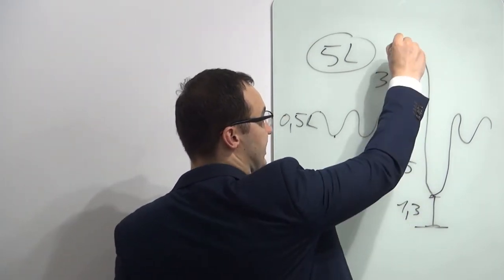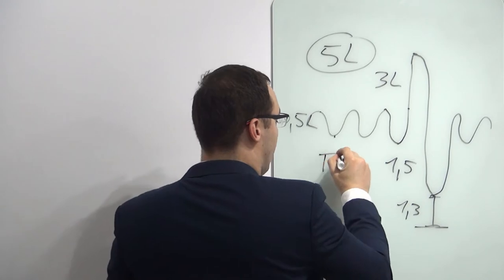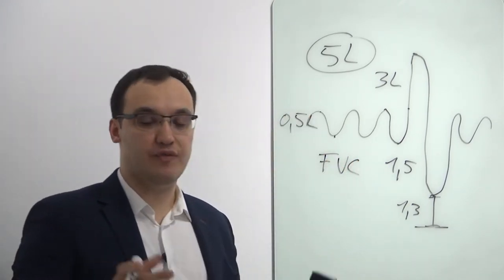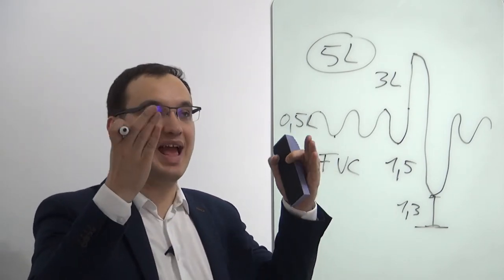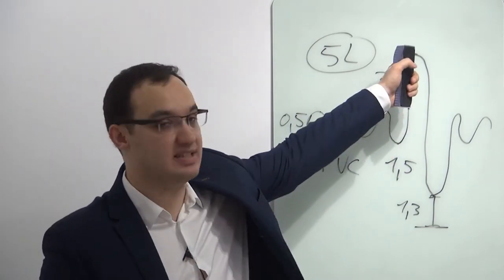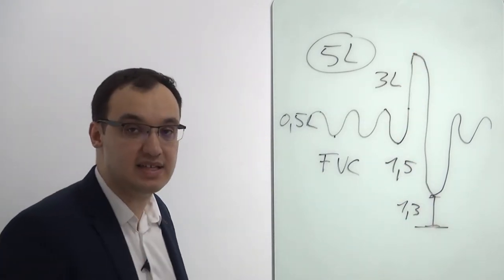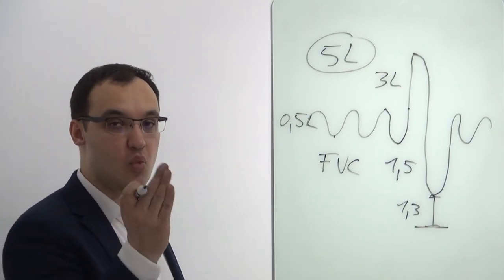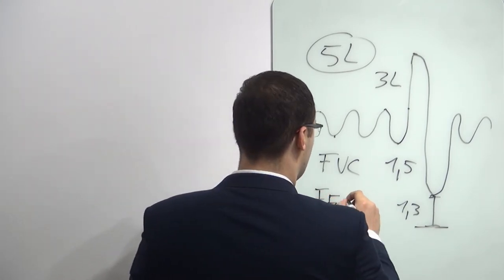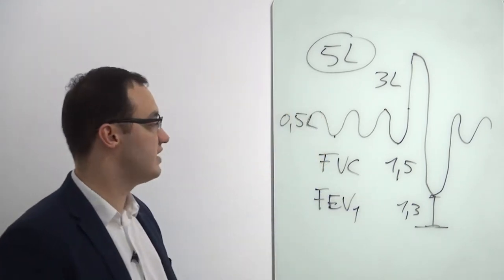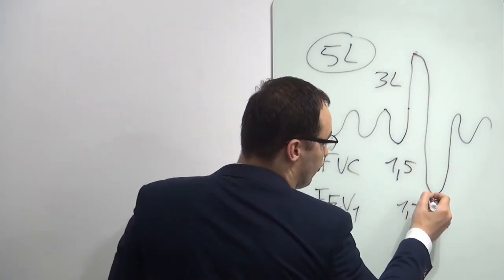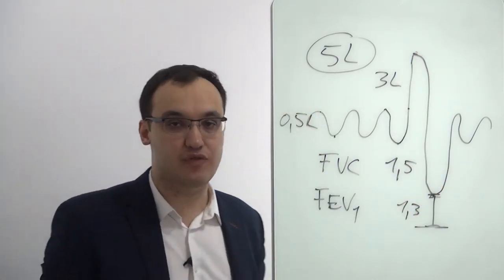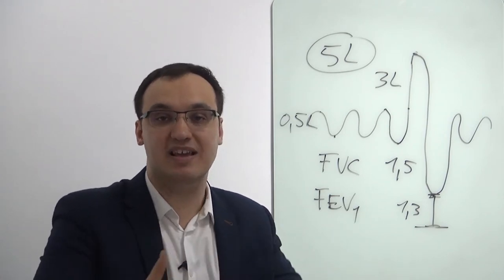In spirometry, we will ask the patient to inhale drastically and exhale drastically. This is called forced vital capacity — the amount of air that you can exhale after inhaling maximum. But then I will also ask them to do it more quickly, and I will measure it in one second. That is called forced expiratory volume in one second. That means the patient will maybe not reach 100%, because I asked them to do it in one second, and as you know, exhaling fully will not happen in one second.